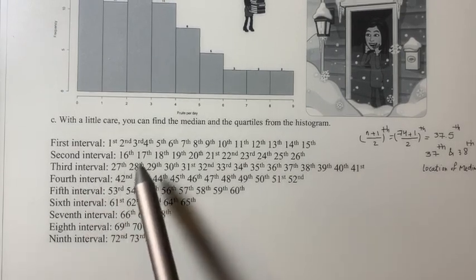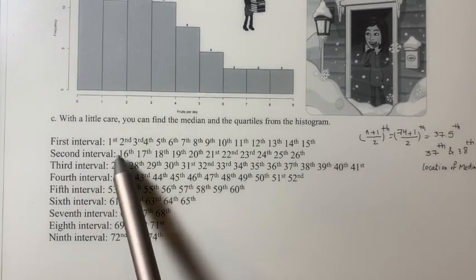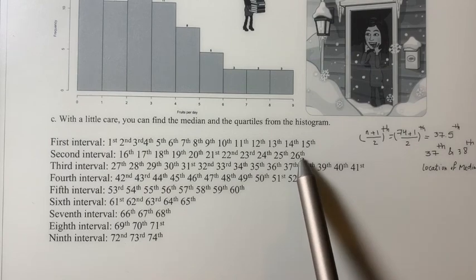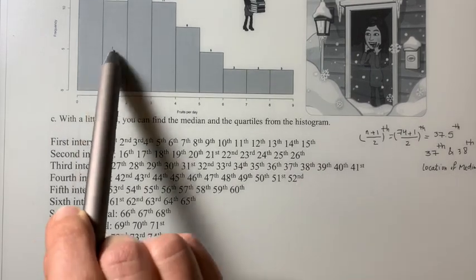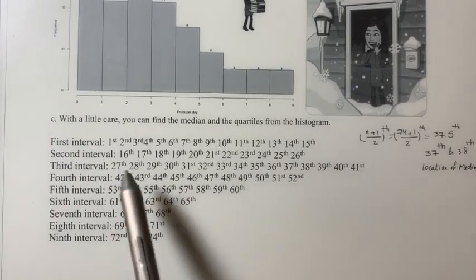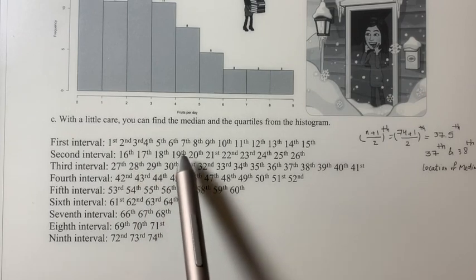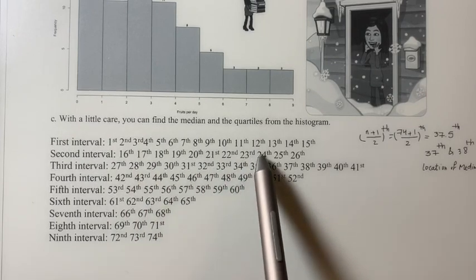And then the second interval, we have observation number 16 up to 26. Why? Because we had 11 individuals there. So 1, 2, 3, 4, 5, 6, 7, 8, 9, 10, 11.